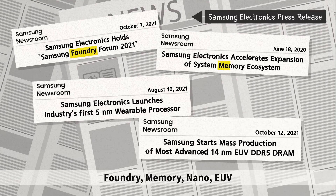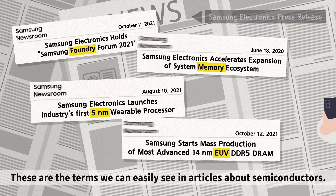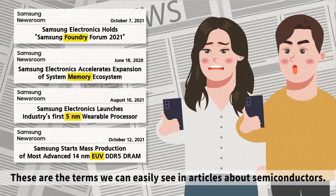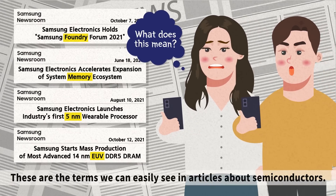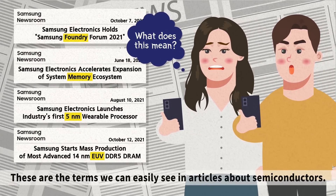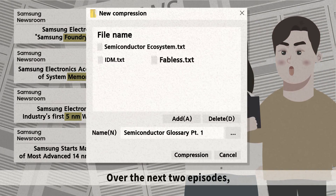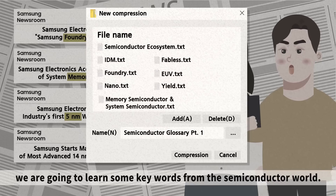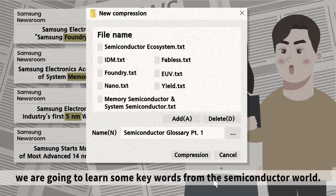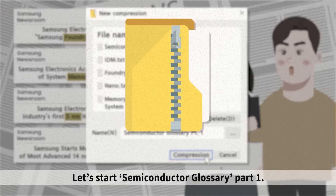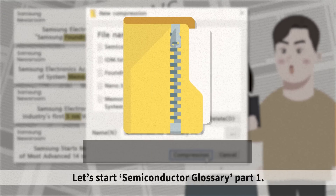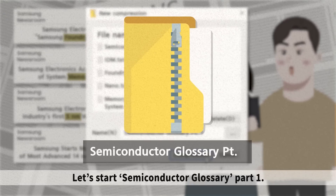Foundry. Memory. Nano. EUV. These are the terms we can easily see in articles about semiconductors. Over the next two episodes, we are going to learn some key words from the semiconductor world. Let's start with Semiconductor Glossary, Part 1.